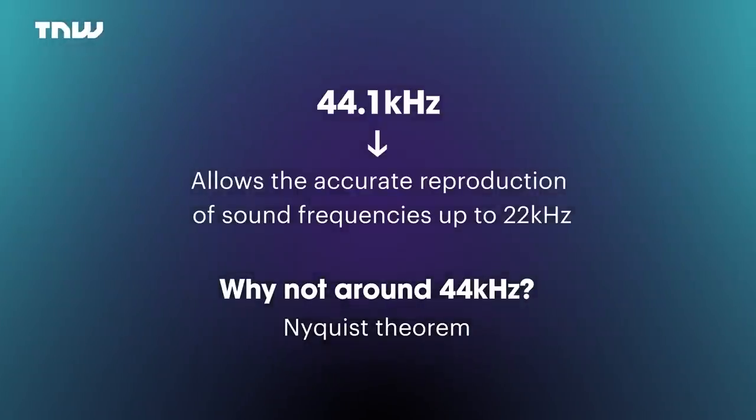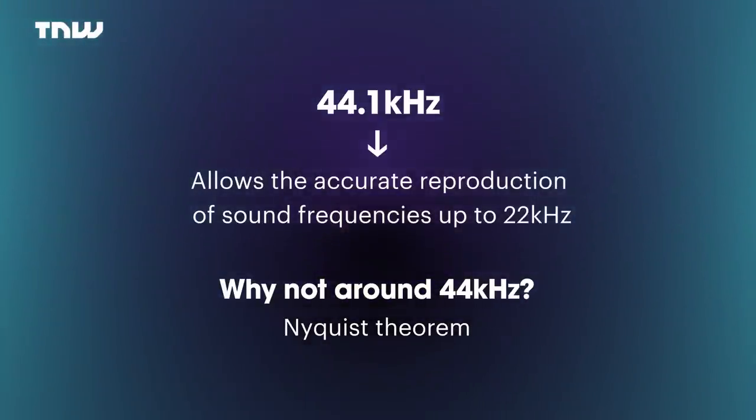Why it doesn't go up to 44 kilohertz is complex — if that's a burning issue, go read up on the Nyquist theorem. The limits of human hearing only go up to 20 kilohertz, and most people cannot hear anywhere near that high anyway. To sum up sampling rate: it's akin to frames per second in an audio sense, and it controls the frequency of the sounds we hear.